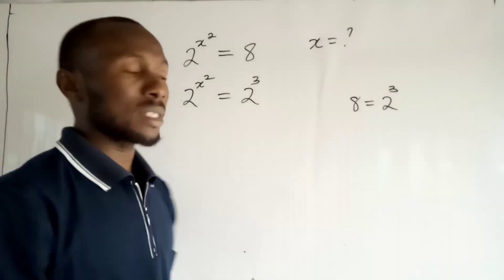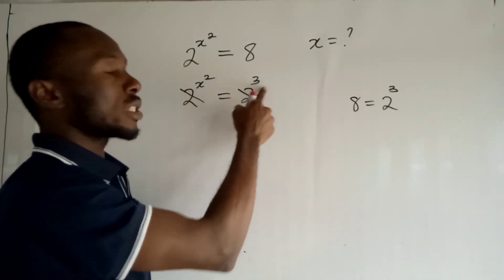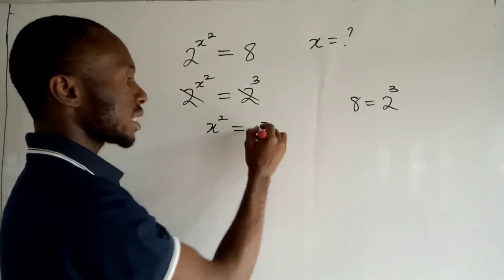And now from the laws of indices, when you have the same base, we can cancel out the base and equate the exponents. So we have x squared is equal to 3.